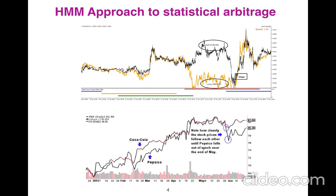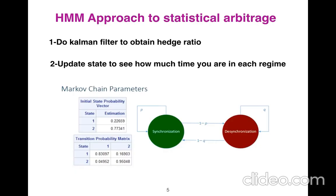Another example is the difference between Coca-Cola and PepsiCo. We first apply the Kalman filter to obtain the hedge ratio, and then we update the state to see how much time we spend in each regime and calculate which regime we are currently in.